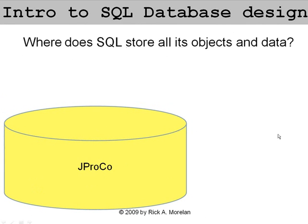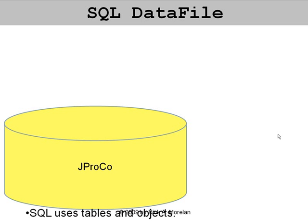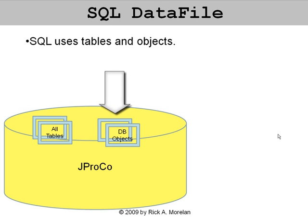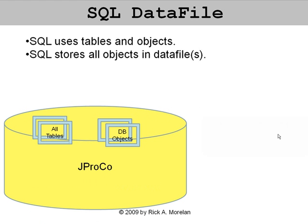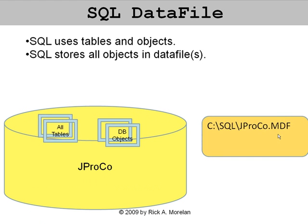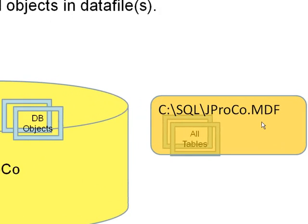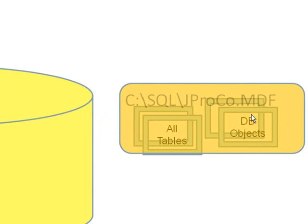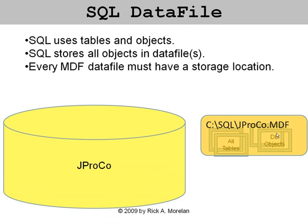Here is a question, and if you did the last lab, you'd pretty much know the answer to it. Where does SQL store all its objects and data? Data files. SQL uses tables and other objects like views, stored procedures, and functions. Most of the time, those just work on other tables, and it stores all of them in data files. In the last example, we had a main data file, and all the objects and all the data of those objects went inside of there.